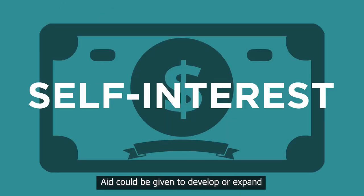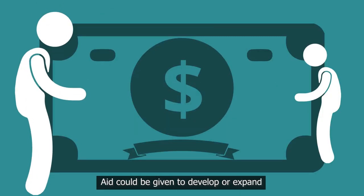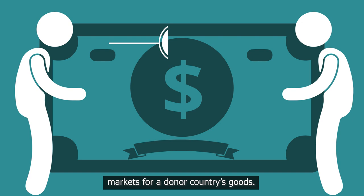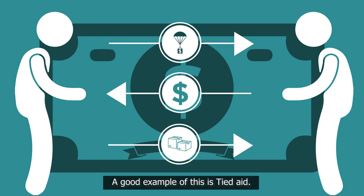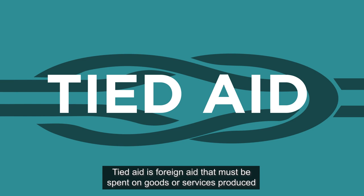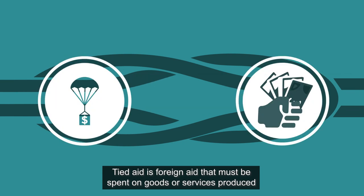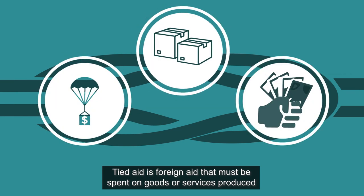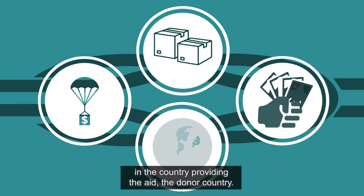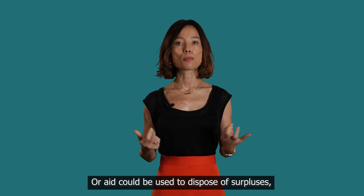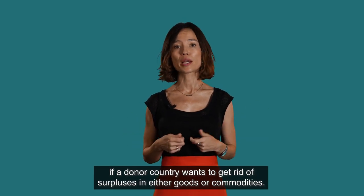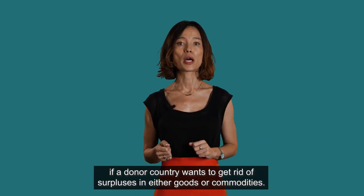Two: economic self-interest. Aid could be given to develop or expand markets for a donor country's goods. A good example of this is Tied Aid — foreign aid that must be spent on goods or services produced in the donor country. Or, aid could be used to dispose of surpluses if a donor country wants to get rid of surpluses in either goods or commodities.